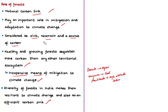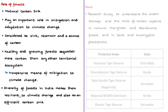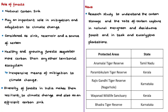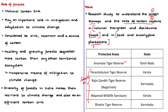India has a diversity of natural biomes — from deserts to alpine meadows, tropical rainforests to temperate pine forests, mangroves to coral reefs, and marshlands to high-altitude lakes. This diversity of forests makes India resilient to climate change and an efficient carbon sink. The international research study examined carbon storage and the rate of carbon capture in natural evergreen forests, residual forests, teak plantations, and eucalyptus plantations. Surveys were conducted to estimate carbon storage of trees inside the Anamalai Tiger Reserve, using satellite data from multiple locations including Parambikulam Tiger Reserve, Rajugandhi Tiger Reserve, Wayanad Wildlife Sanctuary, and Bhadra Tiger Reserve from 2000 to 2018.